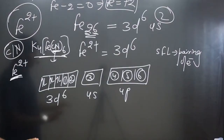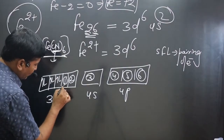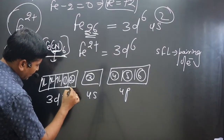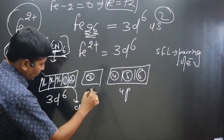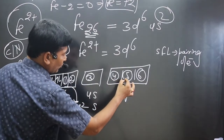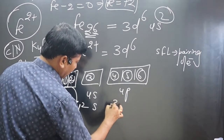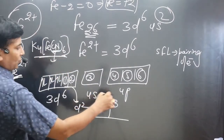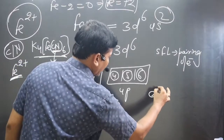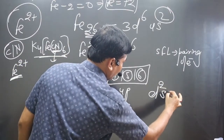Now, what is the type of hybridization? We can see 2 d-orbitals are used, giving D2. Then 1 s-orbital and 3 p-orbitals are used. So we get hybridization d2sp3.